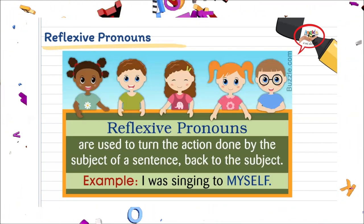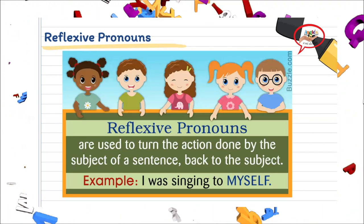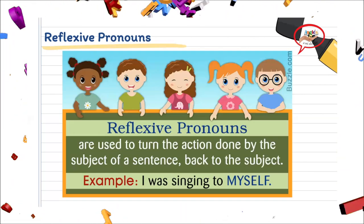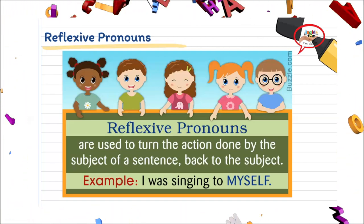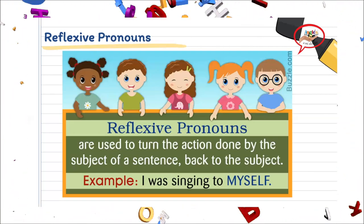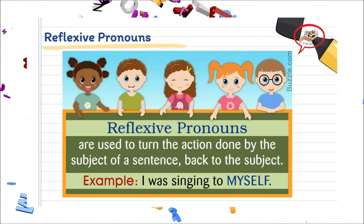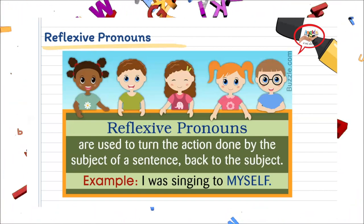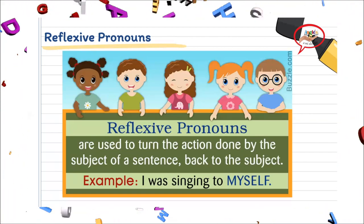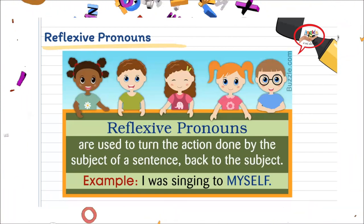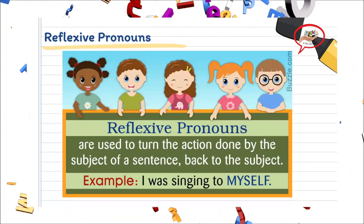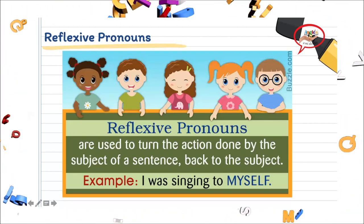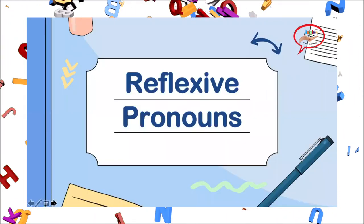Esta oración traducida diría: yo estaba cantándome a mí misma. Estamos haciendo una referencia de vuelta al sujeto — myself se torna en I. Así como todos los pronombres que hemos visto, los reflexive pronouns van a tener uno por cada pronombre en general que nosotros tenemos.